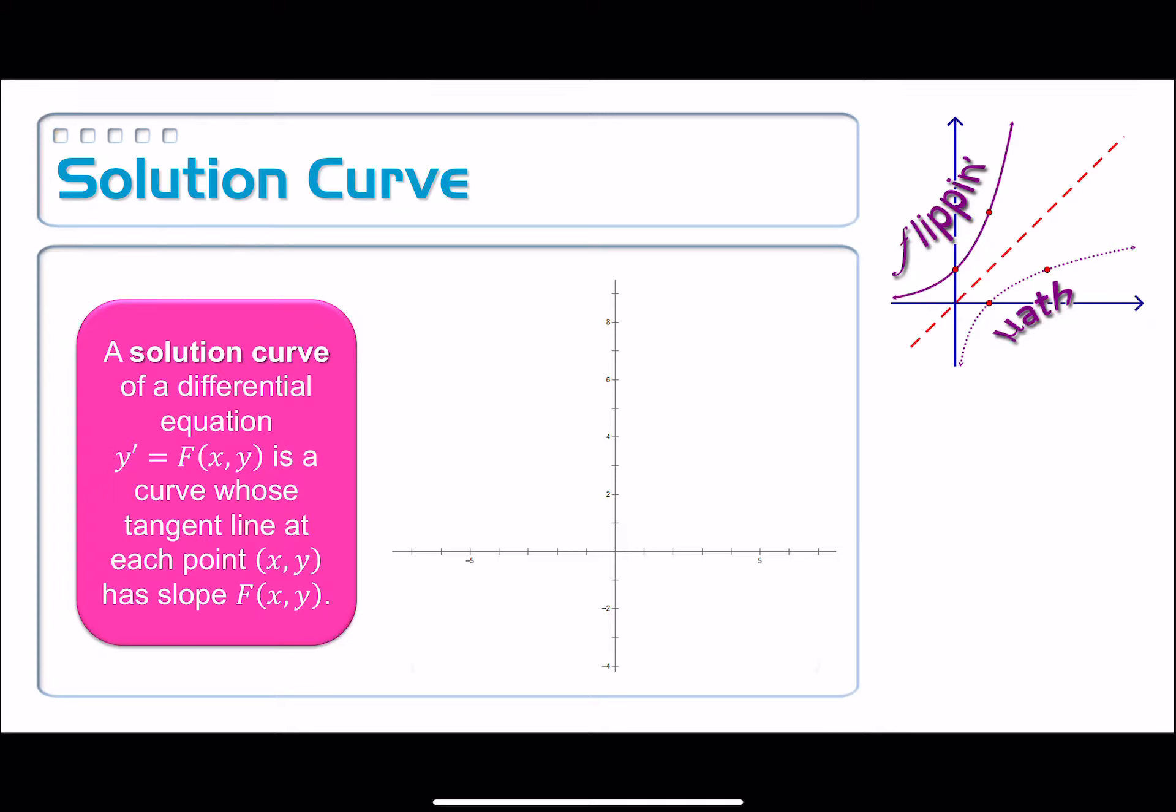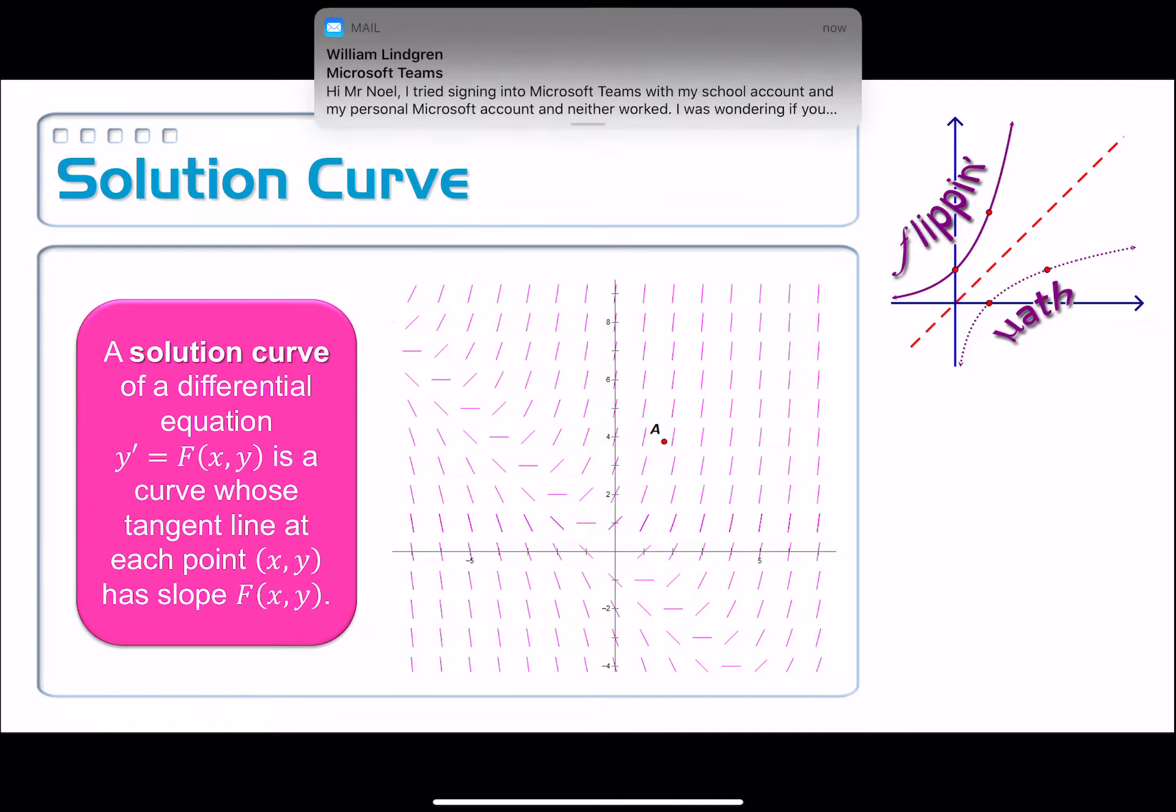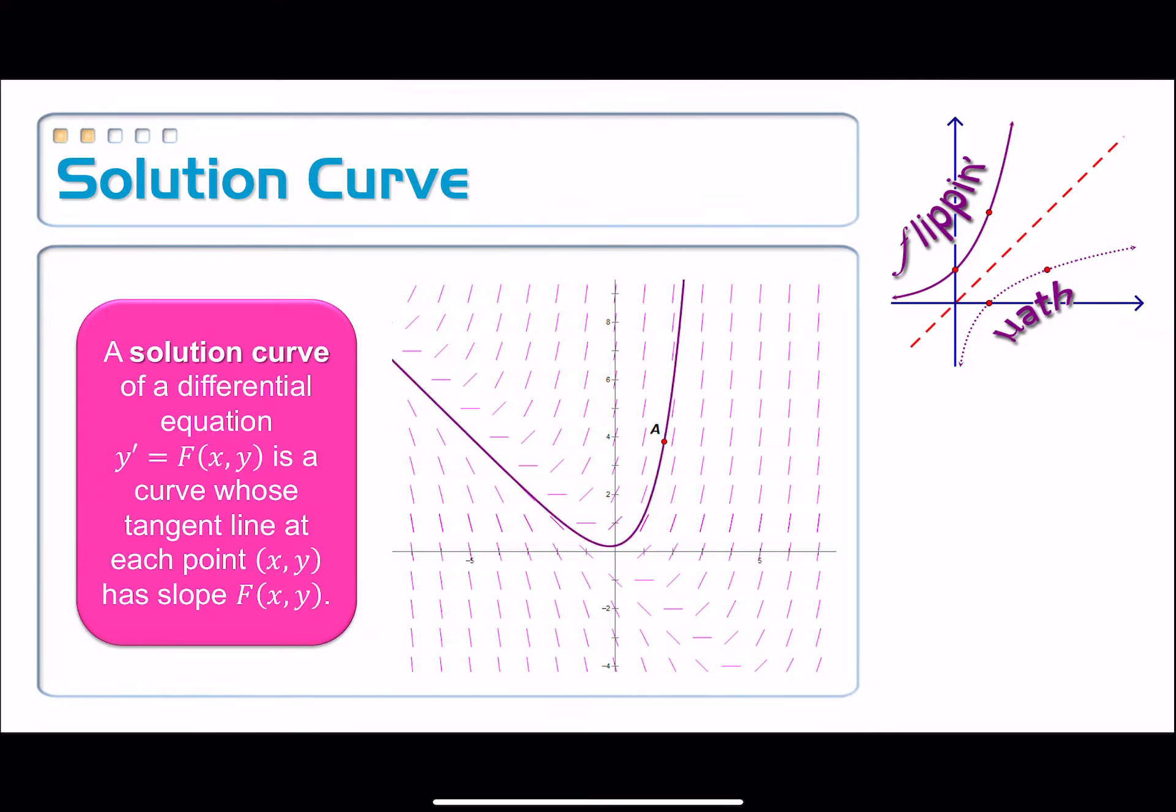So let's generate a slope field here and I need an initial condition which I'm going to call point A. Visualize this as ocean currents or currents within a river, and we plopped a little toy boat here at point A. The slope field is going to push the boat in a particular direction, and there's only one path that it can possibly go on given that initial condition. Here's what this solution curve is going to look like.